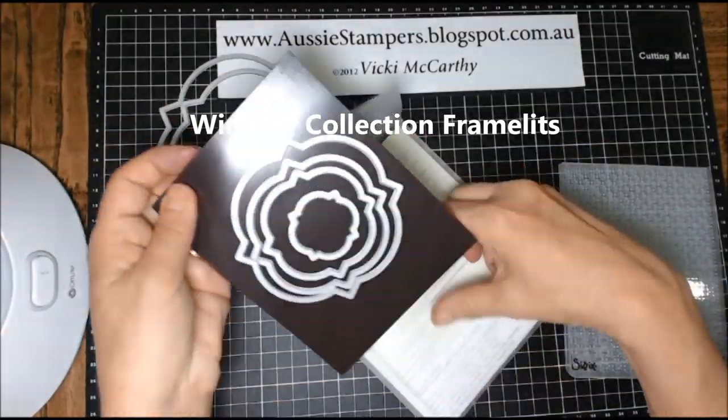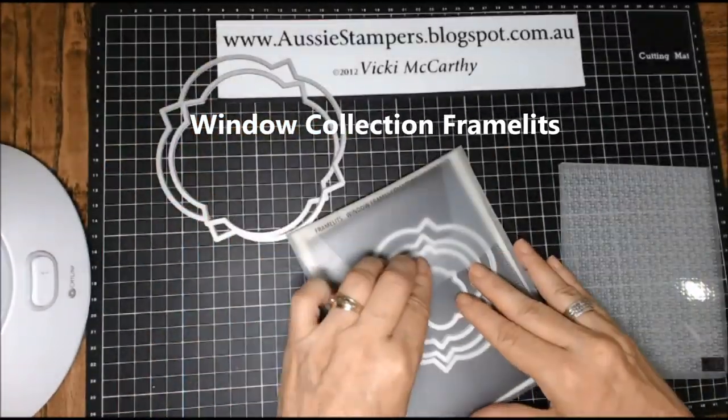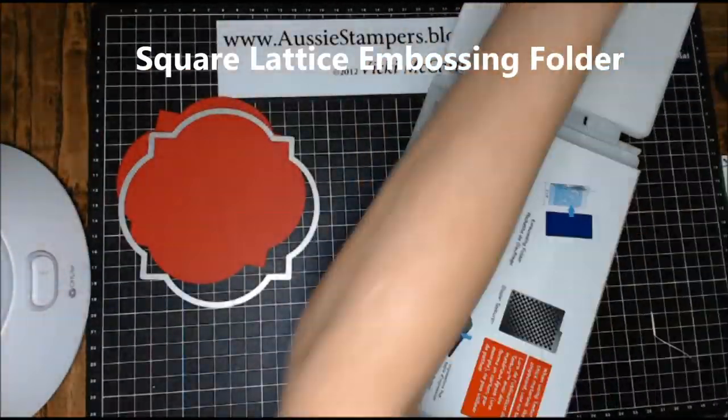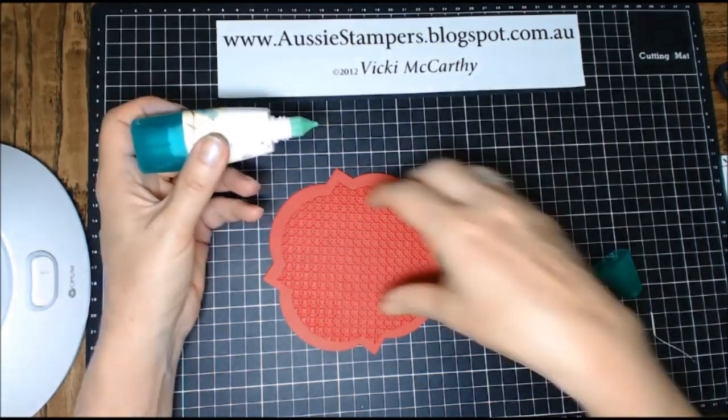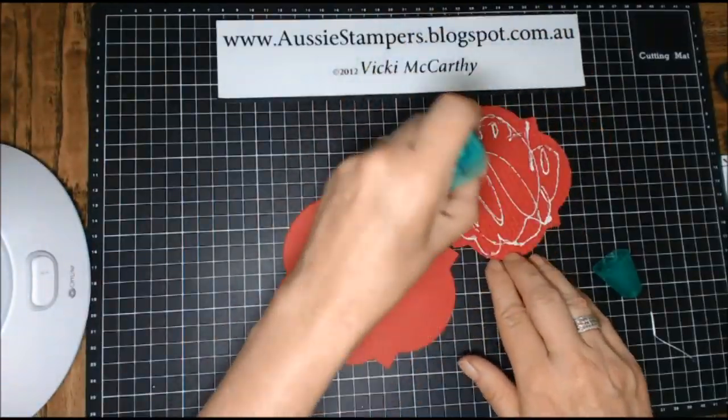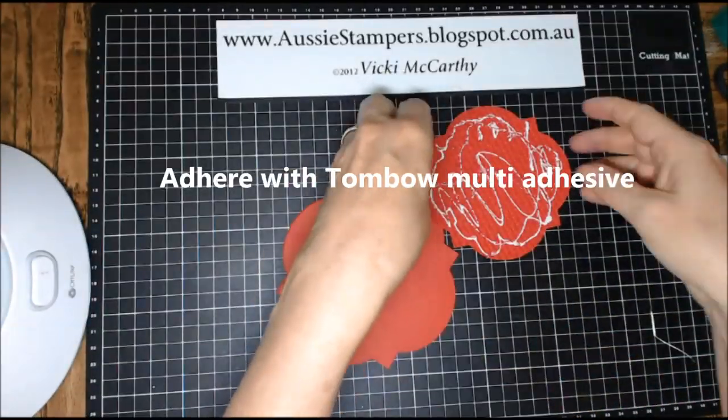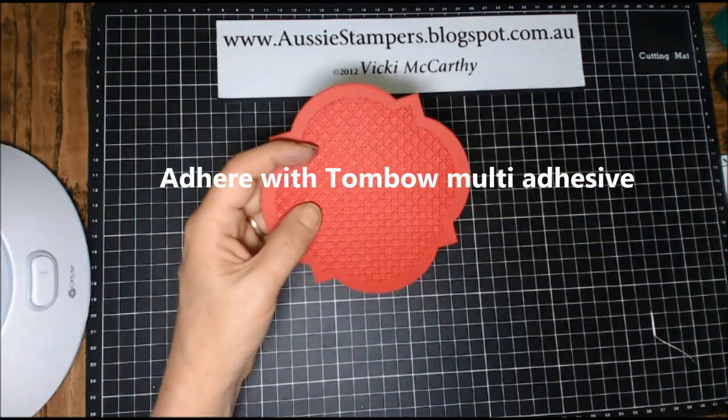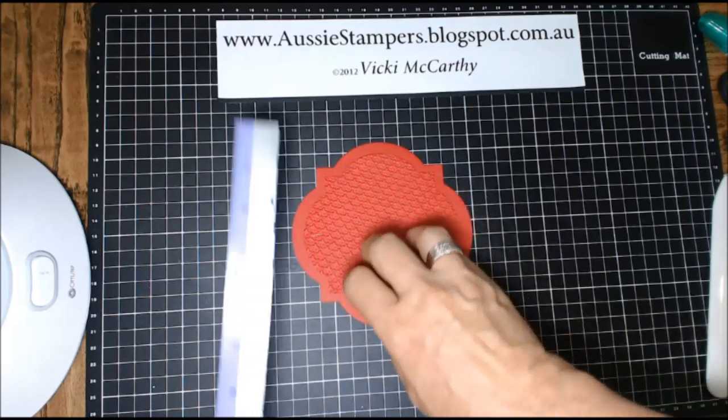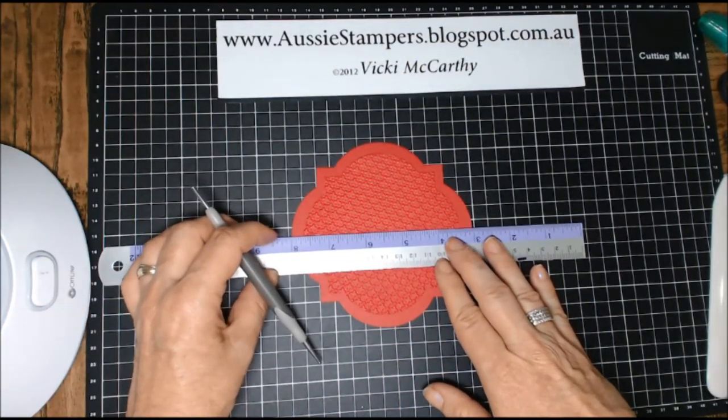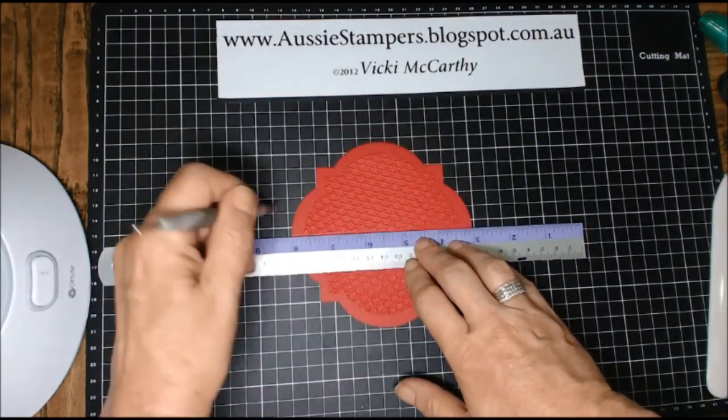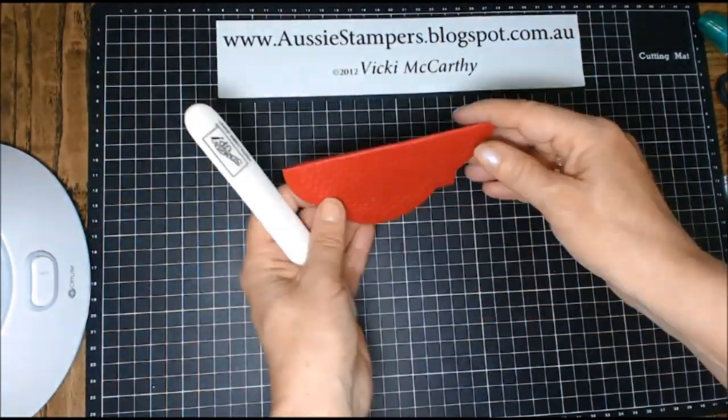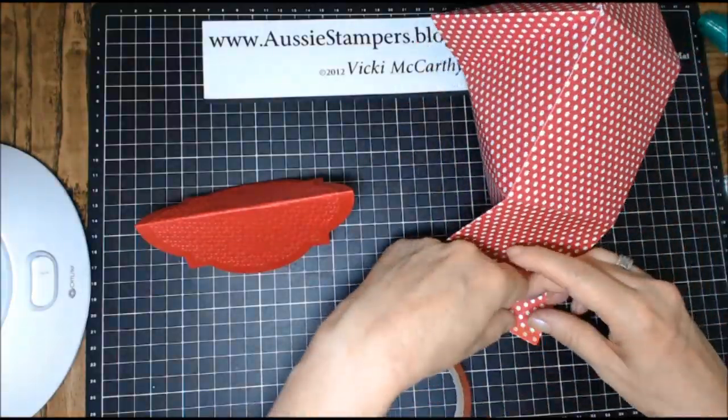Now I'm taking the window collection framelits, the largest and the second largest size. I'm going to get some real red cardstock and cut them and then run it through the square lattice embossing folder. Now I'm going to use some Tombow Multi Adhesive and glue the smaller piece to the larger piece. And I'm going to measure and find the center and just draw a line across with my scoring tool. And you score it in half gently because you don't want to squash the embossing out of it.